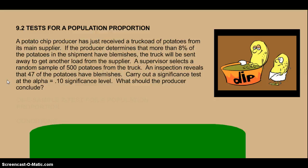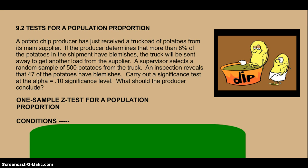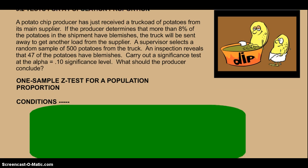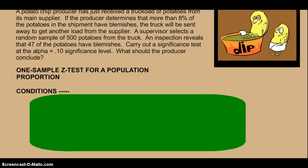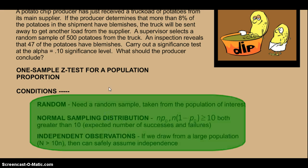So let's walk through everything we have to do in order to do this test. We're going to do a one-sample z-test for population proportion, and the first thing we have to look at are the conditions. Now the good news here is since we just did confidence intervals, the conditions for these tests are not all that dissimilar from what we were doing for confidence intervals.